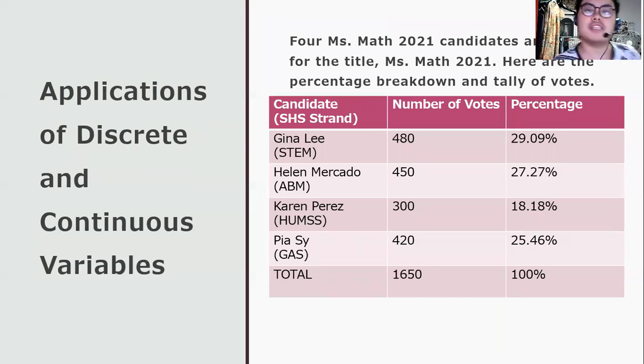We're now going to the applications of discrete and continuous variables. Four Miss Math 2021 candidates are vying for the title Miss Math 2021. Here are the percentage breakdown and tally of votes. Gina received 480 votes, 29.09%. Helen got 450 votes, 27.27%. Karen received 300 votes, 18.18%. Pia received 420 votes, 25.46%. The total number of votes is 1,650 and the total percentage is 100%. Now we're going to classify which among the number of votes or the percentage is discrete or continuous.